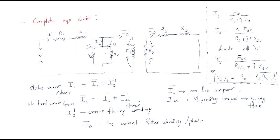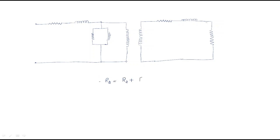In the last session we discussed the complete equivalent circuit, where we modified the rotor resistance to be divided into two terms: r2 plus r2 times (1/s minus 1). Using this concept, we modify the equivalent circuit so that r2 becomes r2 plus r2 into (1/s minus 1). This modification is done on the rotor side.